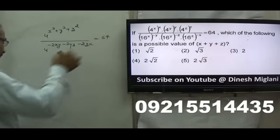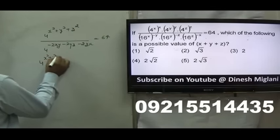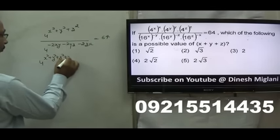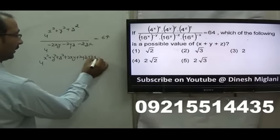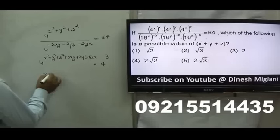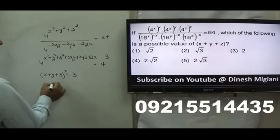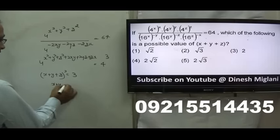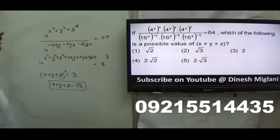This equals 64. Now I bring all values to the numerator: X² + Y² + Z² + 2XY + 2YZ + 2ZX. And 64 is 4 raised to power 3. This expression is (X + Y + Z)², which equals 3. Or I can say X + Y + Z equals √3. Hence, the second option is my answer: the possible value of X + Y + Z equals √3.